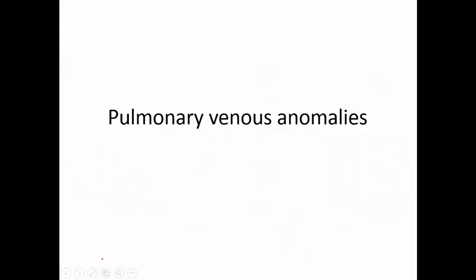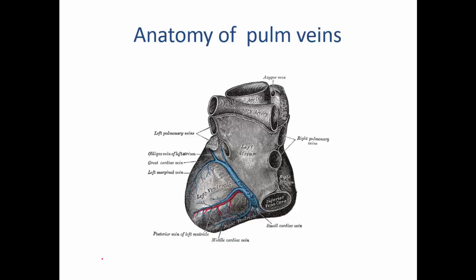This is a tutorial on pulmonary venous anomalies. It's quite a complex topic but I'll try and keep it short and as simple as I can. This is the view of the heart as if you were looking from the back of your chest. You can see the left atria, with the right pulmonary veins draining there and the left pulmonary veins draining there — four pulmonary veins draining to the left atria. This is the normal connection.